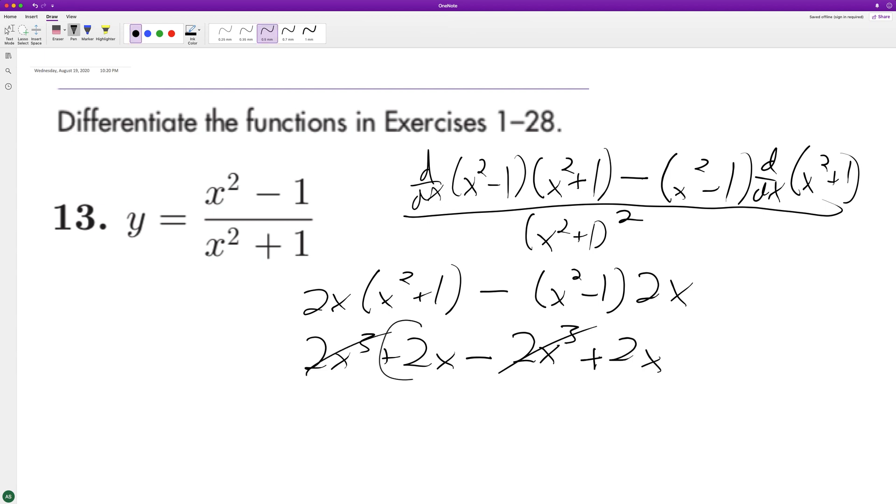So the two x's cancel out. We can combine the two x's. So we get four x over quantity x squared plus one squared.